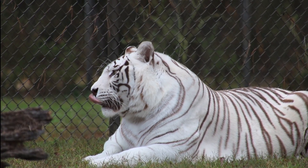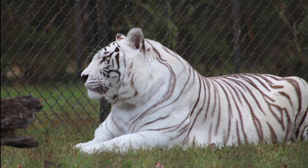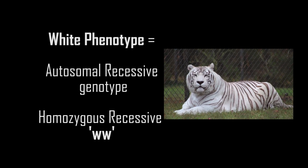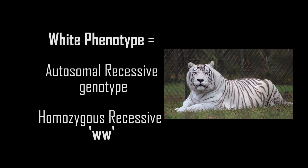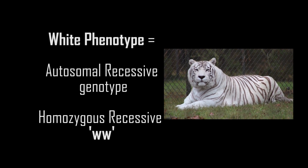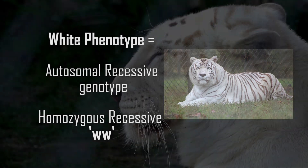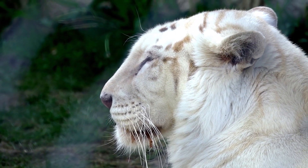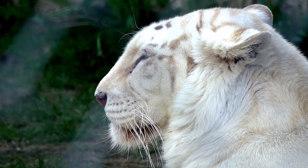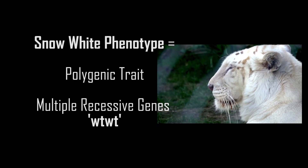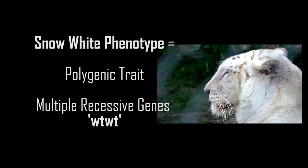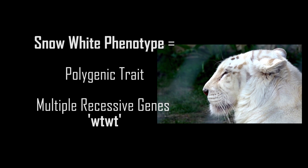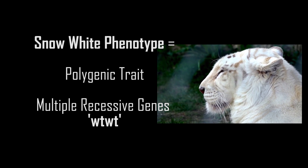The white tiger phenotype, or white and black tiger, is also caused by an autosomal recessive gene. If w was the gene for this trait, their genotype would be lowercase w, lowercase w. The snow white tiger phenotype is the least common — they are white with white stripes. This is a polygenetic trait caused by multiple recessive genes. In our case, the genes for this animal would be lowercase wt, lowercase wt.